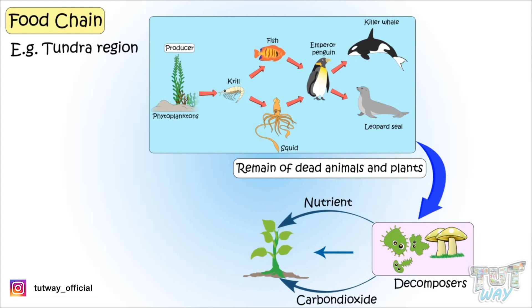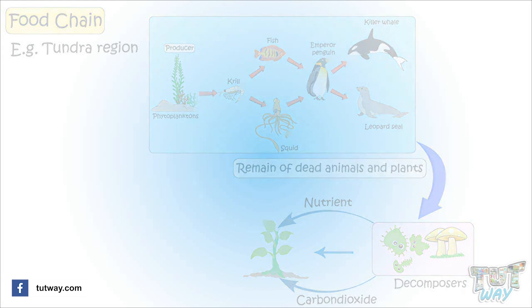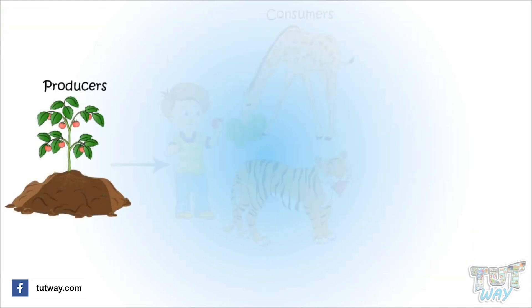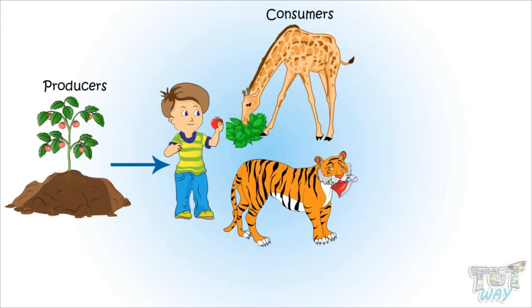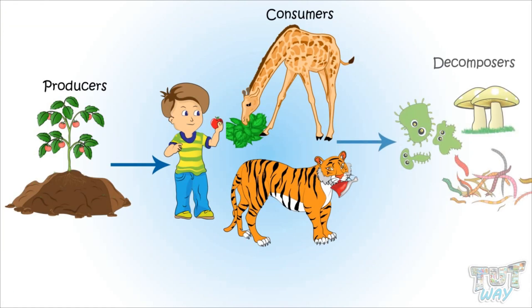So we learned so many examples of food chains and some terms like producers, consumers, and decomposers.